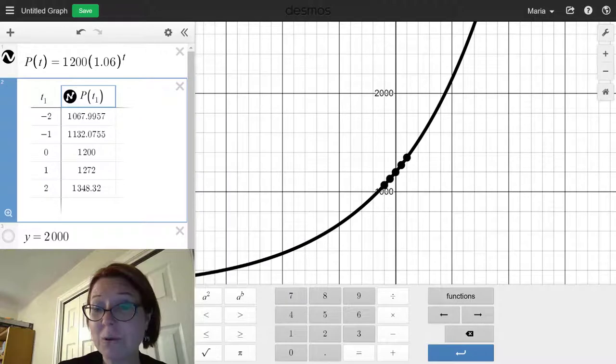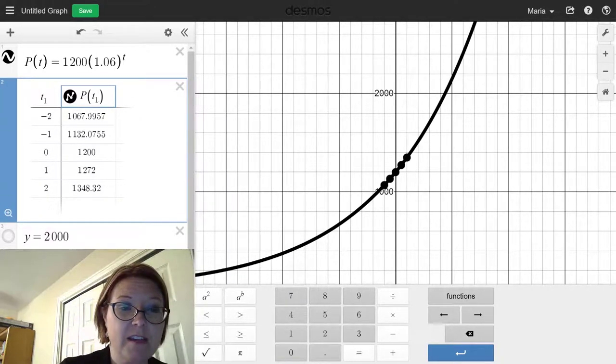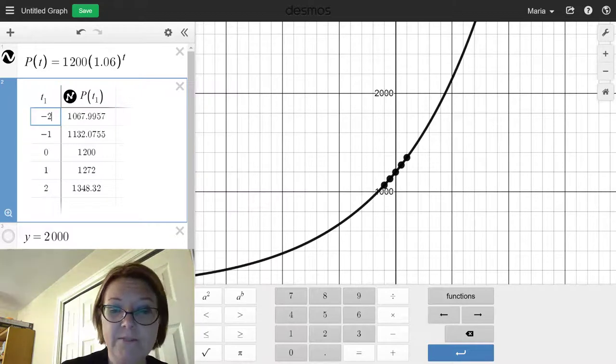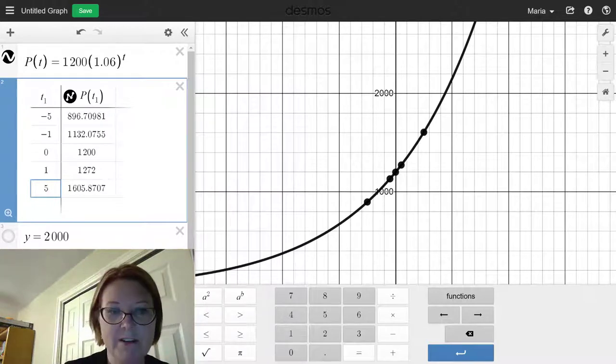And I can always change a few of these points on the graph as well. So if I want to have values at, say, negative 5, I can change that one. Or positive 5, I can change, say, the 2 to a positive 5. So now I have some values I can graph.